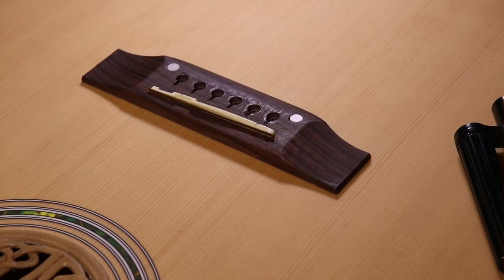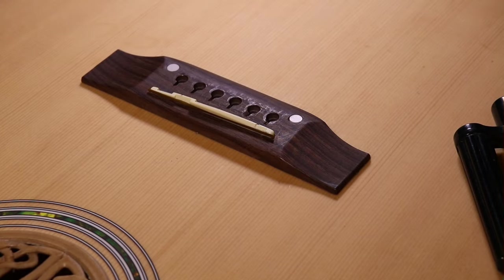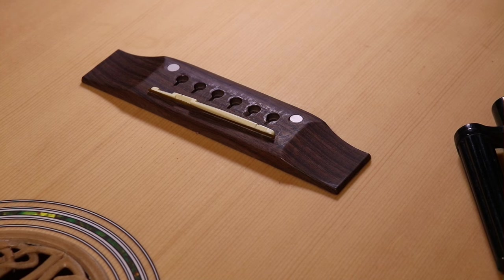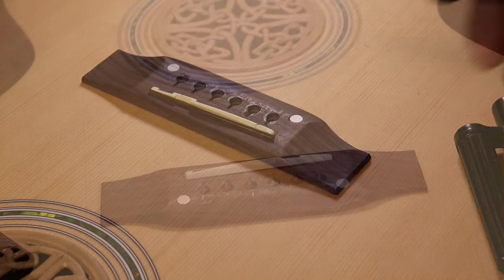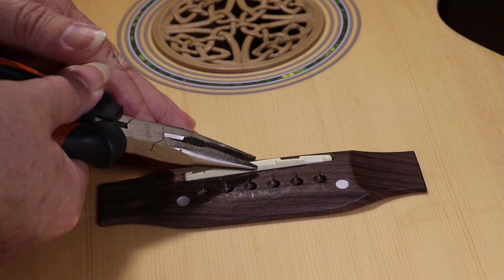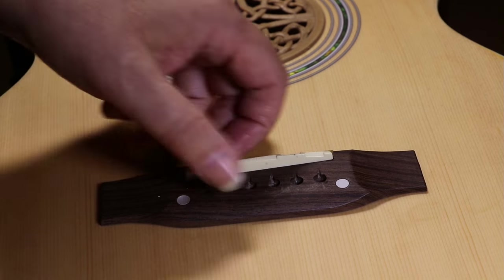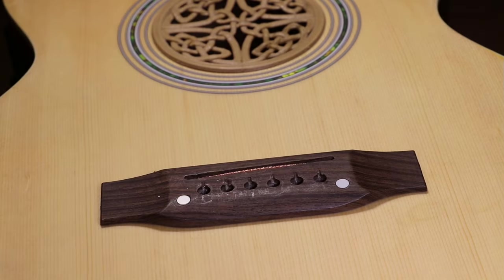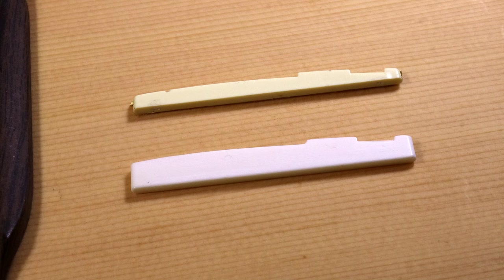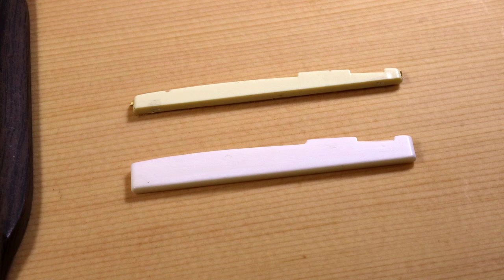The saddle isn't glued into place, so in some cases it can just be pulled out with the fingertips. However, on this guitar, I need to use a pair of pliers. Once you've removed the saddle, we can now use it as a template to get the new saddle to exactly the same height, or if you need to make any adjustments to the action, you can do those at this stage as well.